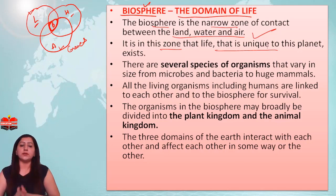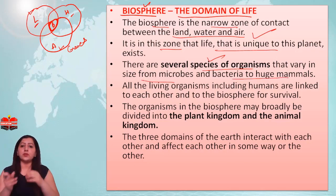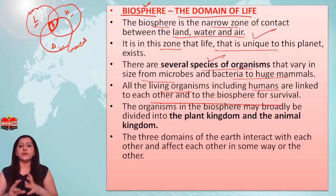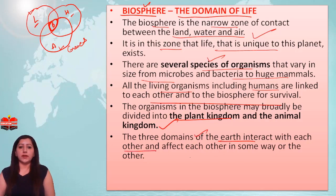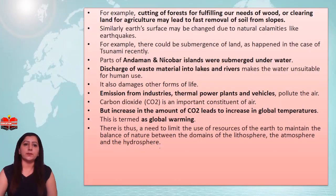In the biosphere, several species of organisms exist, varying in size from microbes and bacteria to huge mammals. All living organisms, including humans, are interconnected with each other for their survival. The plant kingdom and animal kingdom both exist here. The three domains of the Earth — lithosphere, hydrosphere, and atmosphere — interact with each other and affect each other in some way or the other.